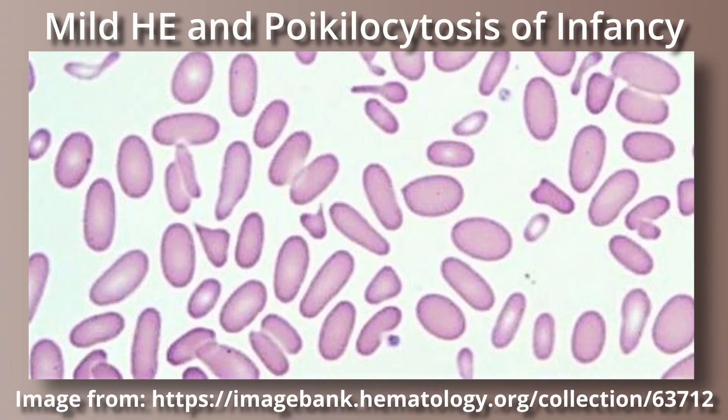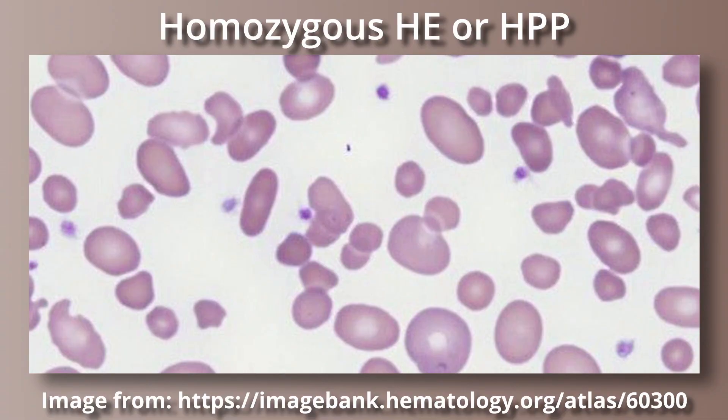Infants with mild HE and poikilocytosis of infancy usually have prominent poikilocytosis, microspherocytes, fragmentation, budding of cells, and variable degrees of elliptocytosis. However, by one to two years the morphology will change to characteristic mild HE. Rare patients with homozygous HE or HPP will have marked microspherocytes, poikilocytosis, fragments, and very few elliptocytes.